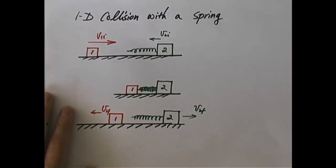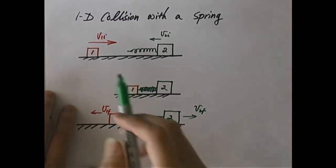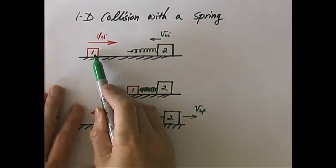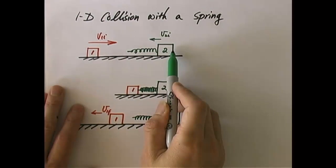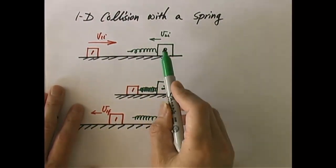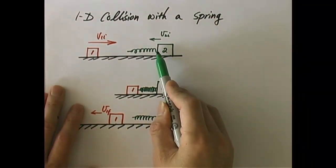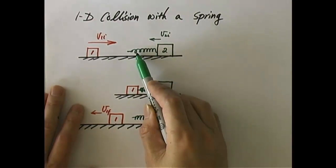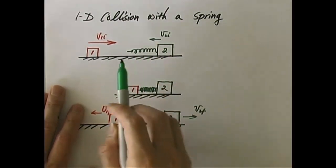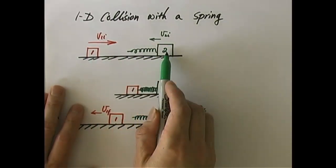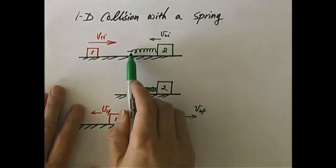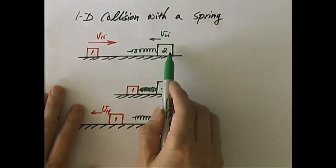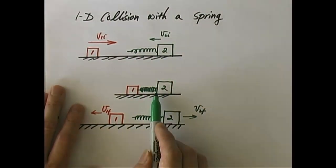Let's look at another one-dimensional collision example. The interesting thing about this problem is that we have object 1 and 2, and object 2 is attached to a light ideal massless spring. When object 1 collides with object 2, it doesn't really touch object 2 directly — it touches the spring that's connected to object 2, so it's going to compress the spring.